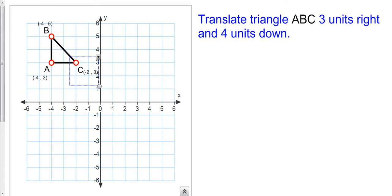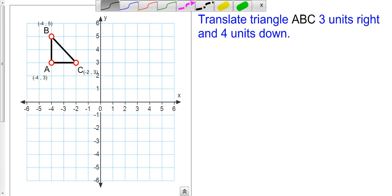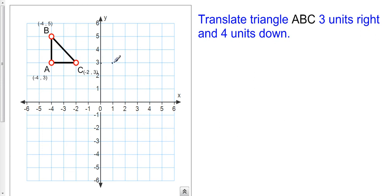Over on the left here, I have triangle ABC on a coordinate plane, and you can see the coordinates are listed here. So in order to translate this triangle three units to the right and four units down, I'm going to start at each vertex. Let's start at vertex C — I'm going to count one, two, three to the right, and then four down: one, two, three, four. And so this is going to be my new C, and we're going to call that C prime.